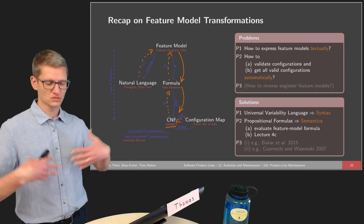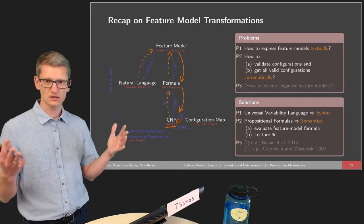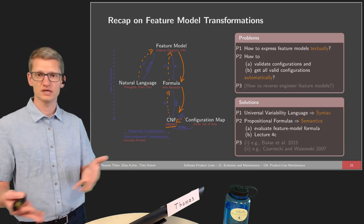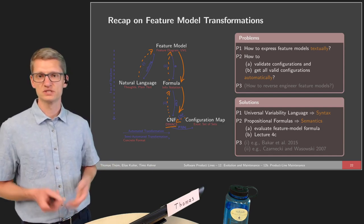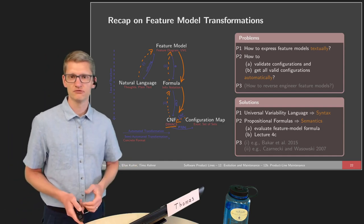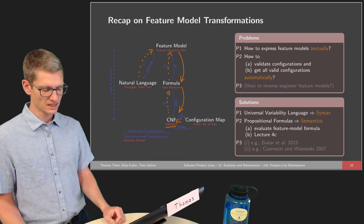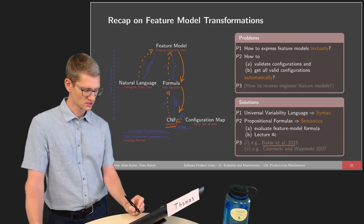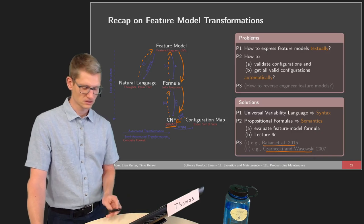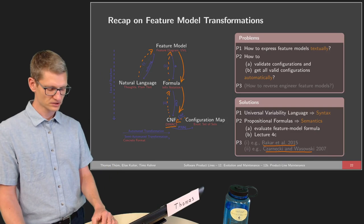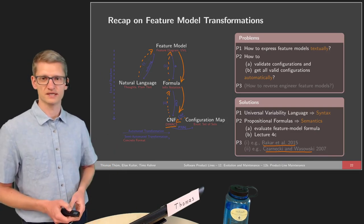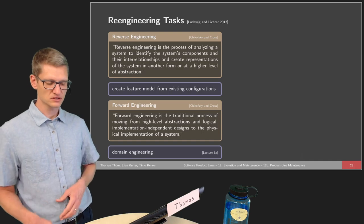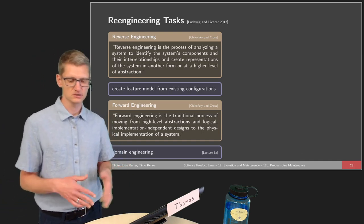We could consider a program with one-time variability and want to transfer it into a product line with a feature model. We run the program under different configurations, see which configurations work, and then create a feature model. This is known as re-engineering — and specifically, the use case of creating a feature model from existing configurations is known as reverse engineering: the process of analyzing a system to identify its components and interrelationships and create a representation at a higher level of abstraction.